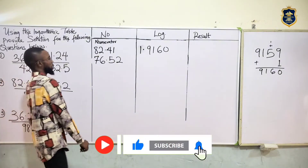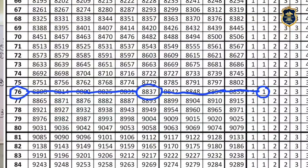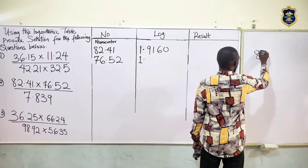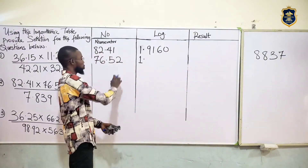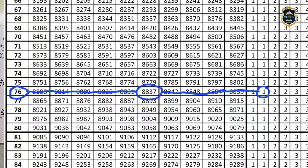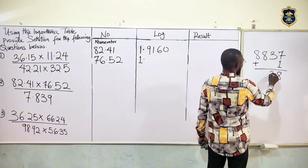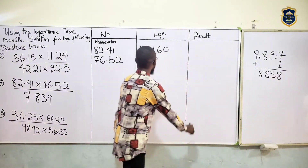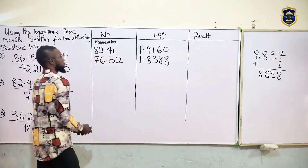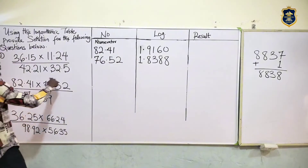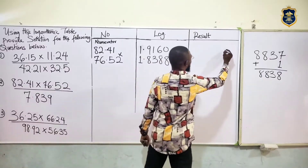If we add, we'll have 9160. So the mantissa for 82.41 is 9160. That's for the first one. Then the second value is 76.52. We move once — characteristics is 1. We look for log 76 under 5, which should be 8837. The difference of 2 is 1.